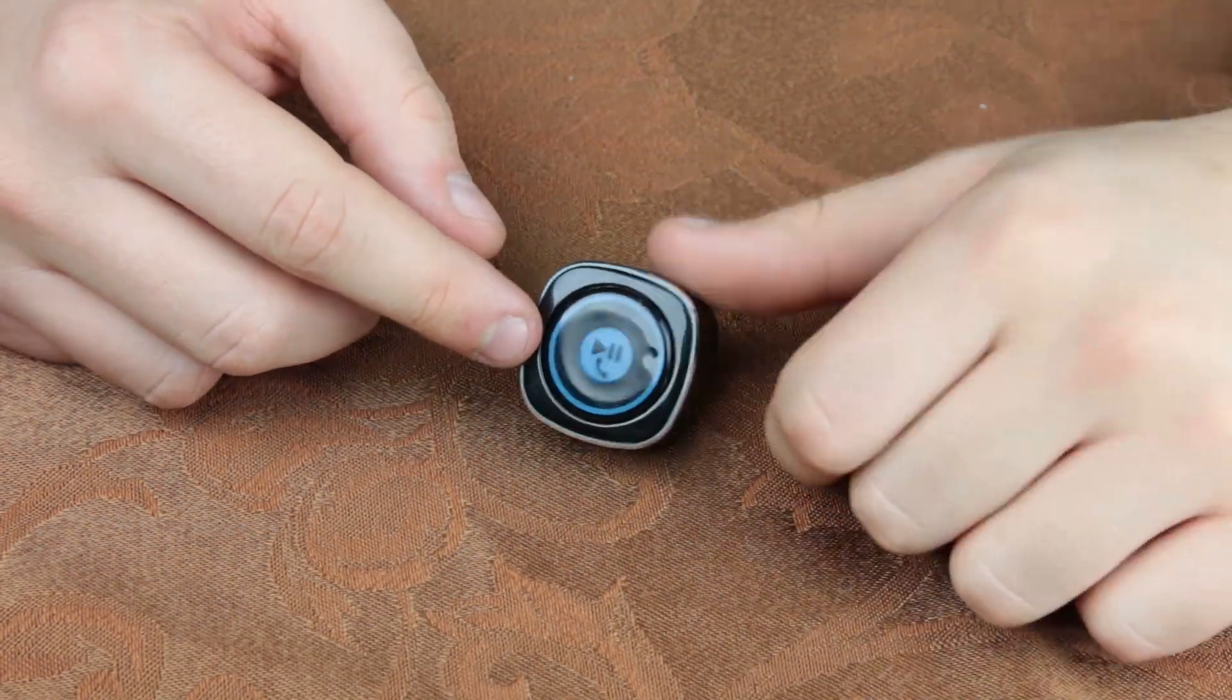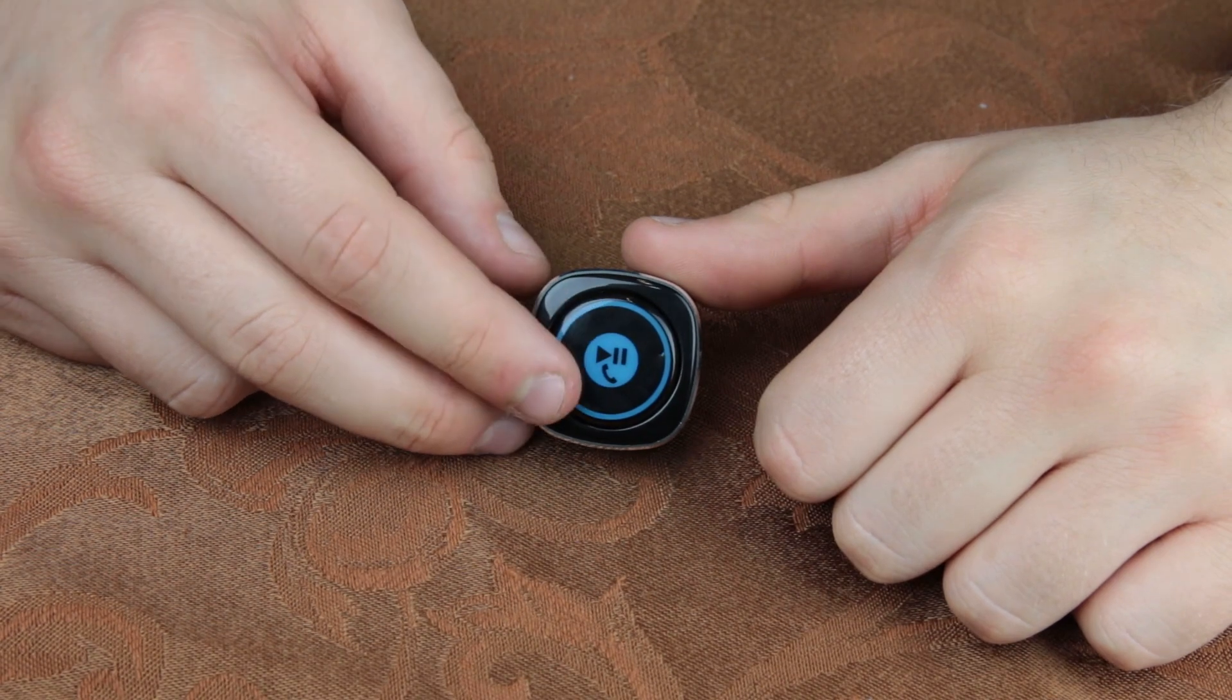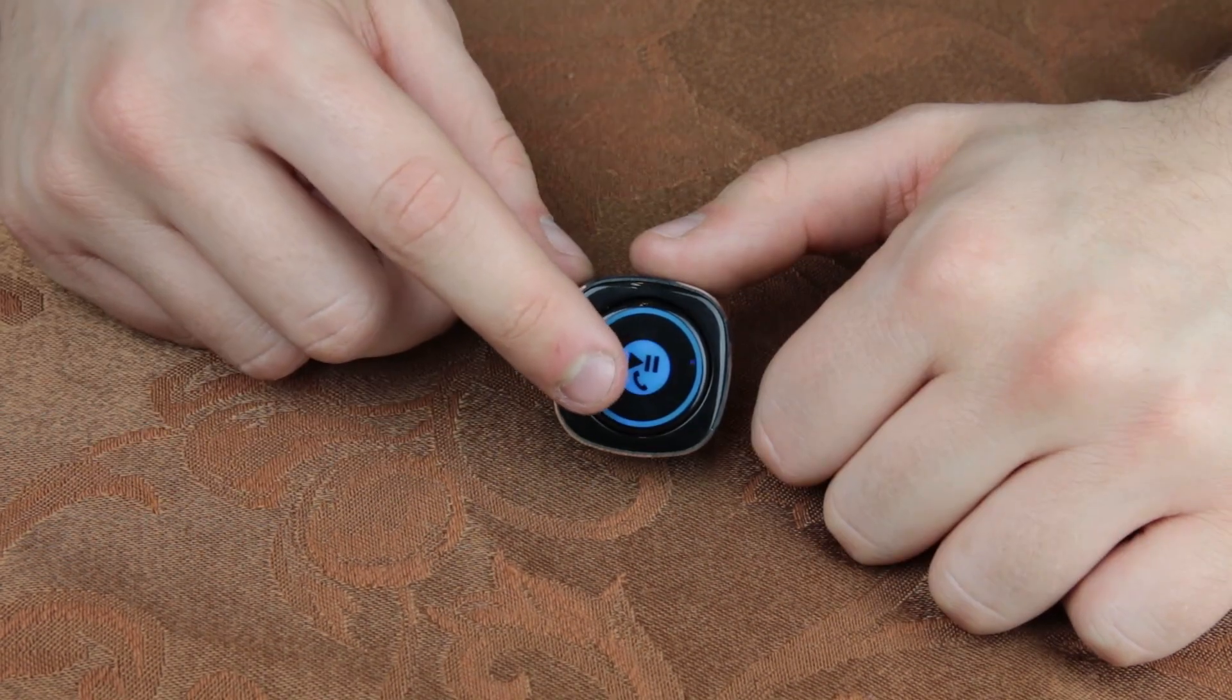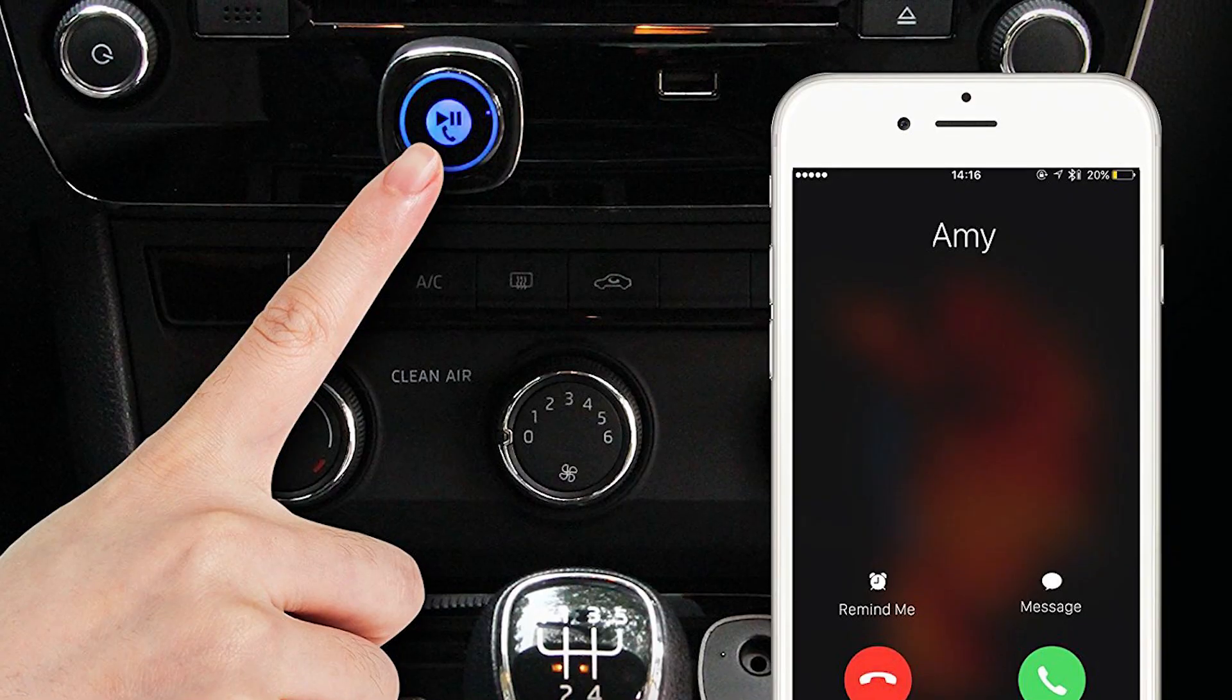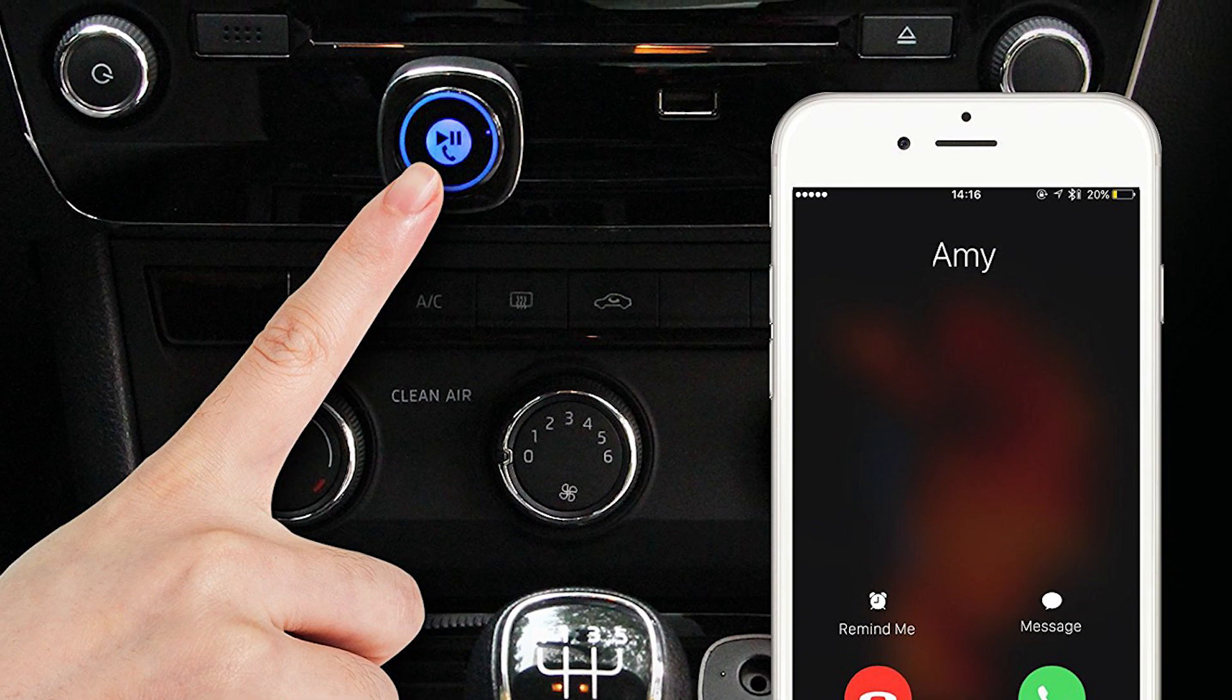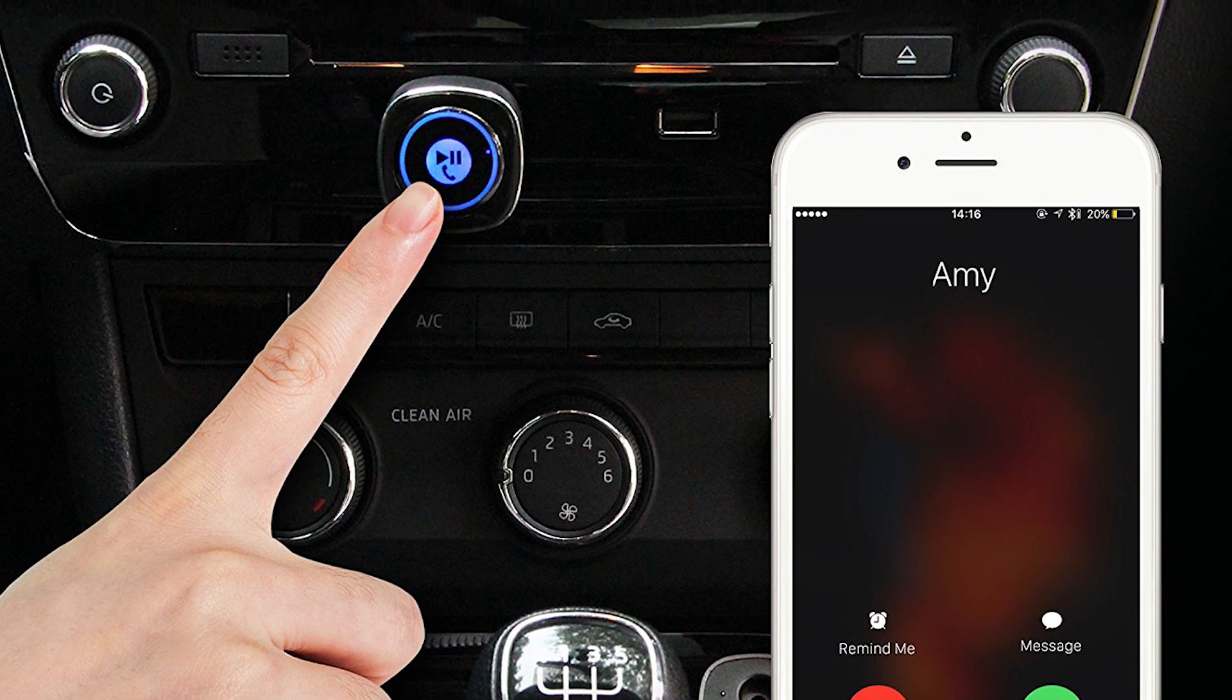So as you can see the device has a little pause, play, and phone button. The phone button means that it has a microphone built into this which allows you to do hands-free calling through this device.